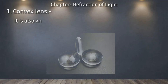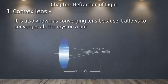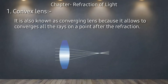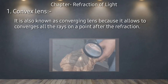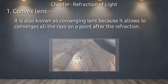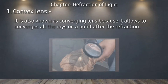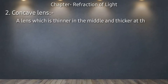A convex lens is also known as a converging lens because it allows all light rays to converge on a single point after refraction. इसको converging lens भी कहा जाता है क्योंकि यह इस पर गिरने वाली सभी lights को किसी एक point पर focus कर देता है। आपने शायद वो experiment देखा होगा जहाँ हम एक convex lens से match stick या paper को जलाते हैं।